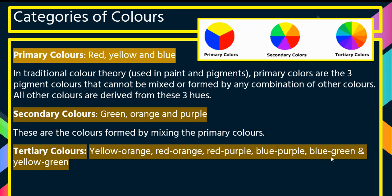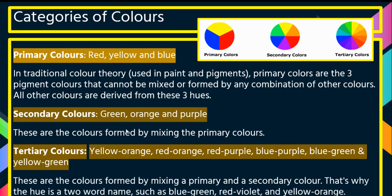Then there are tertiary colors, which you might not be familiar with: yellow-orange, red-orange, red-purple, blue-purple, blue-green, and yellow-green. These are the colors formed by mixing a primary and a secondary color together, and that's why the hue is a two-word name such as blue-green or red-violet. It's important to be able to use these technical terms — primary, secondary, tertiary colors — when explaining the color wheel you're going to create.